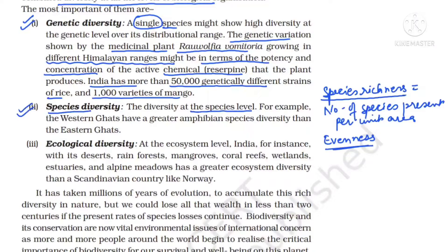Areas which have high species richness and high evenness are more stable. One example is the Western Ghats, which have great amphibian species diversity as compared to the Eastern Ghats.